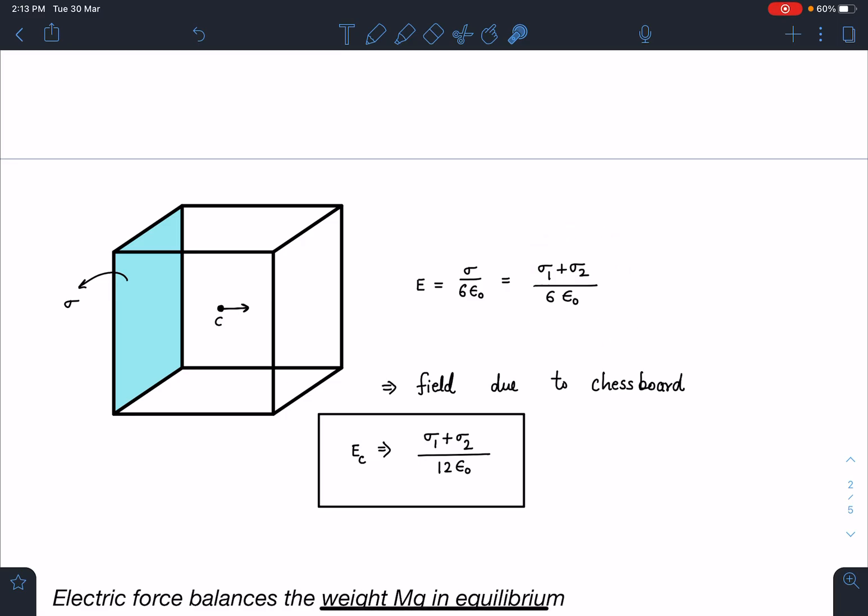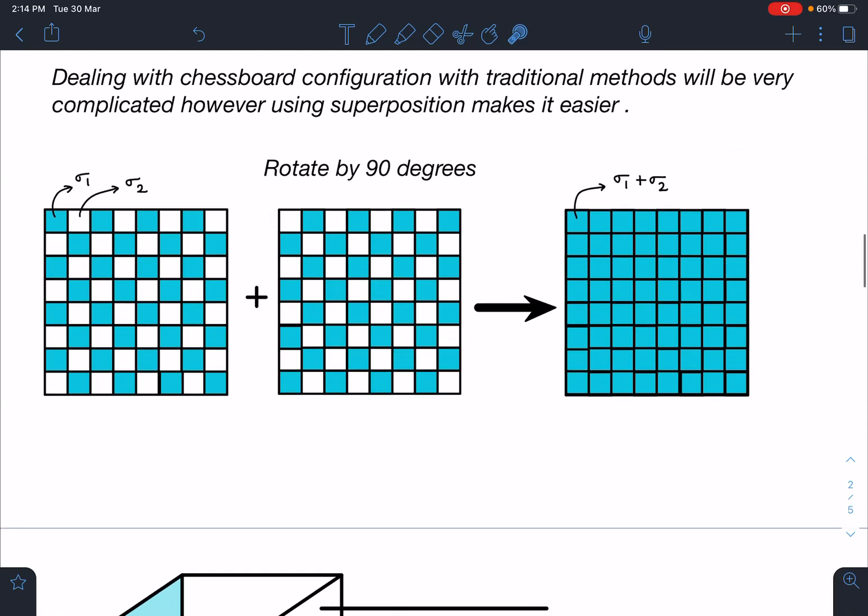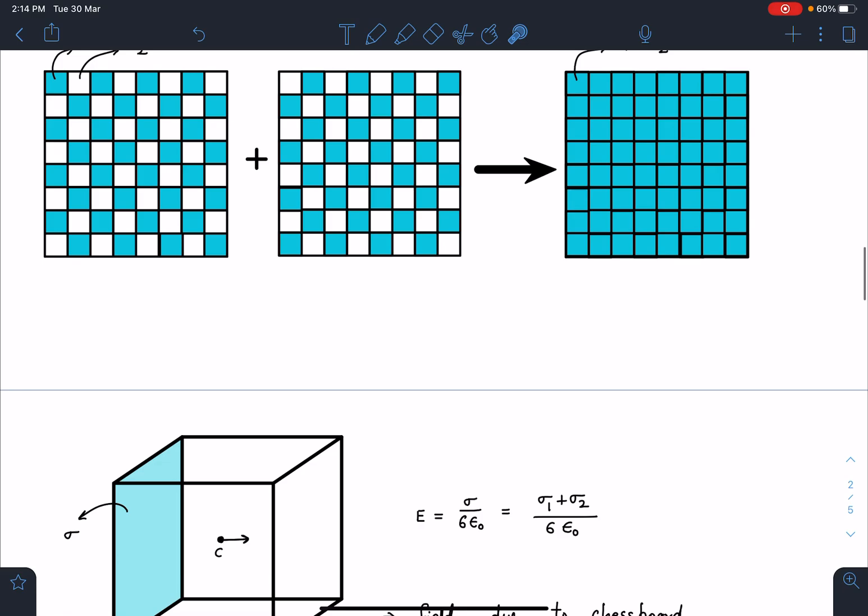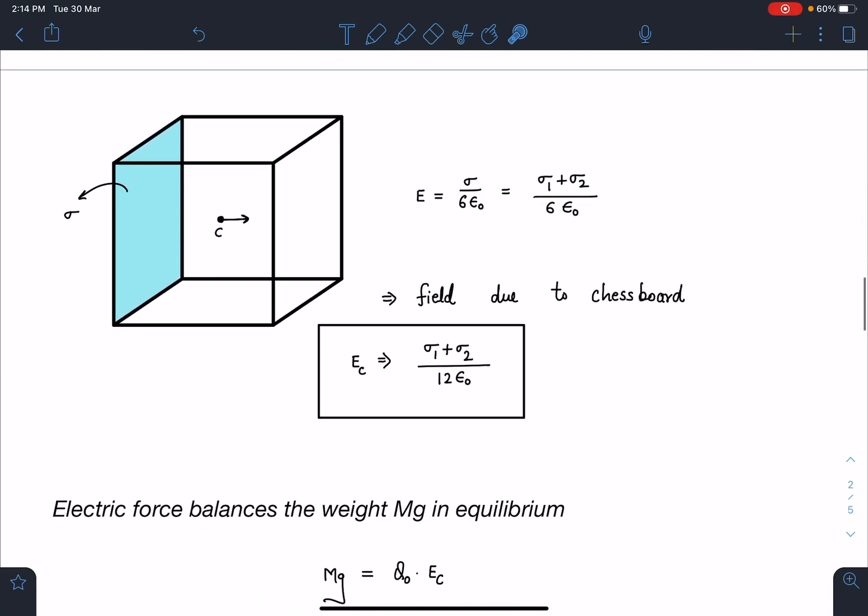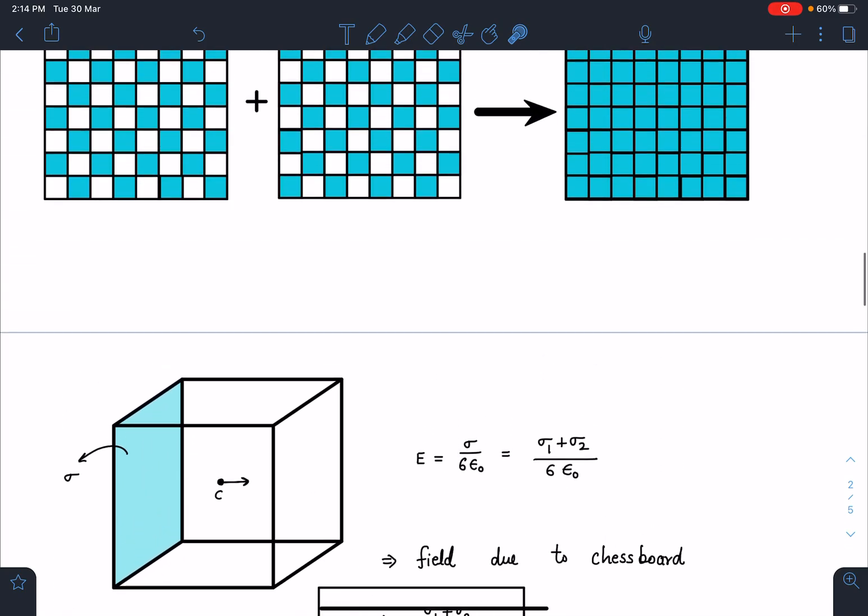Now field due to the chessboard—due to one such board it is E, and due to this also it is E, so 2E. So basically Ec equals this field by 2, so (σ₁ + σ₂)/(12ε₀). This is going to be the field due to one of the chessboards on its axis at a distance of L/2.